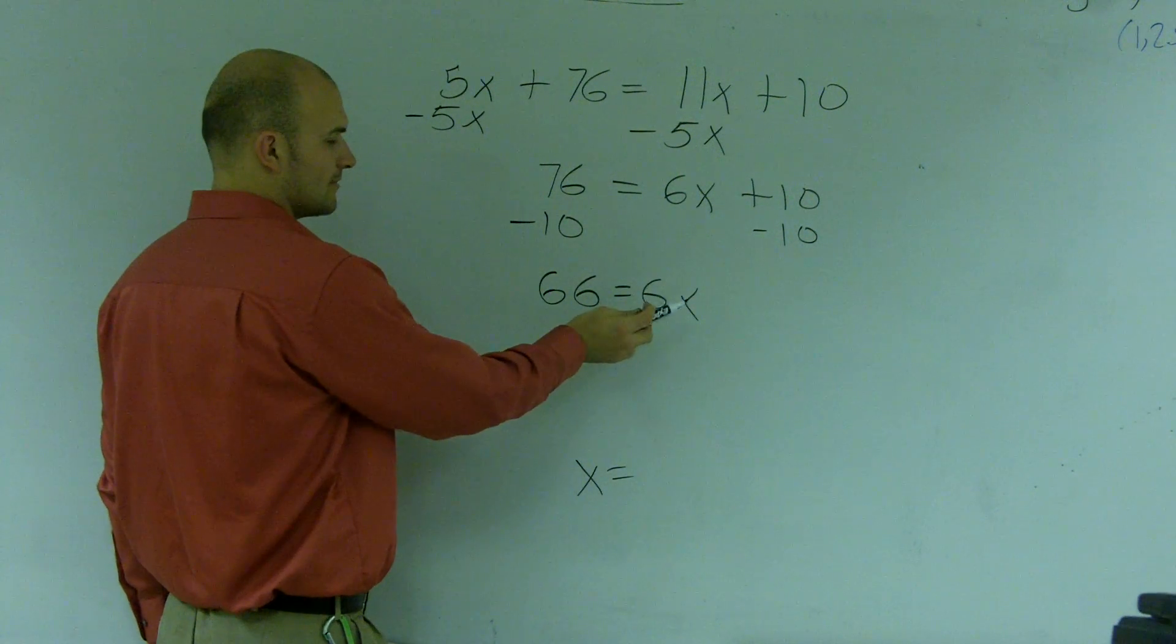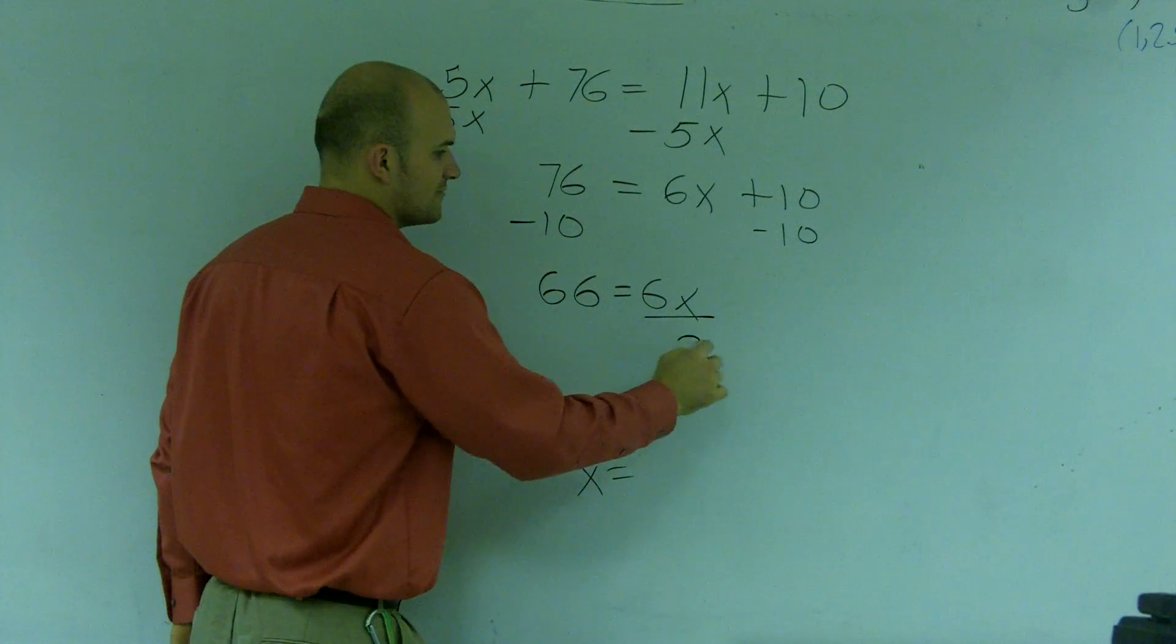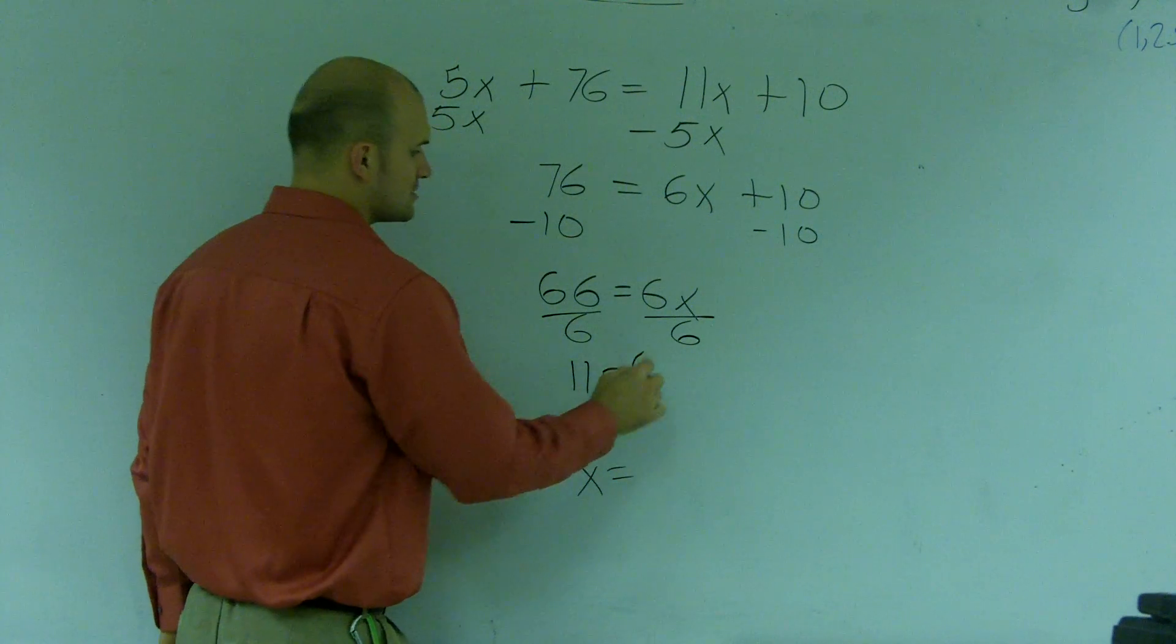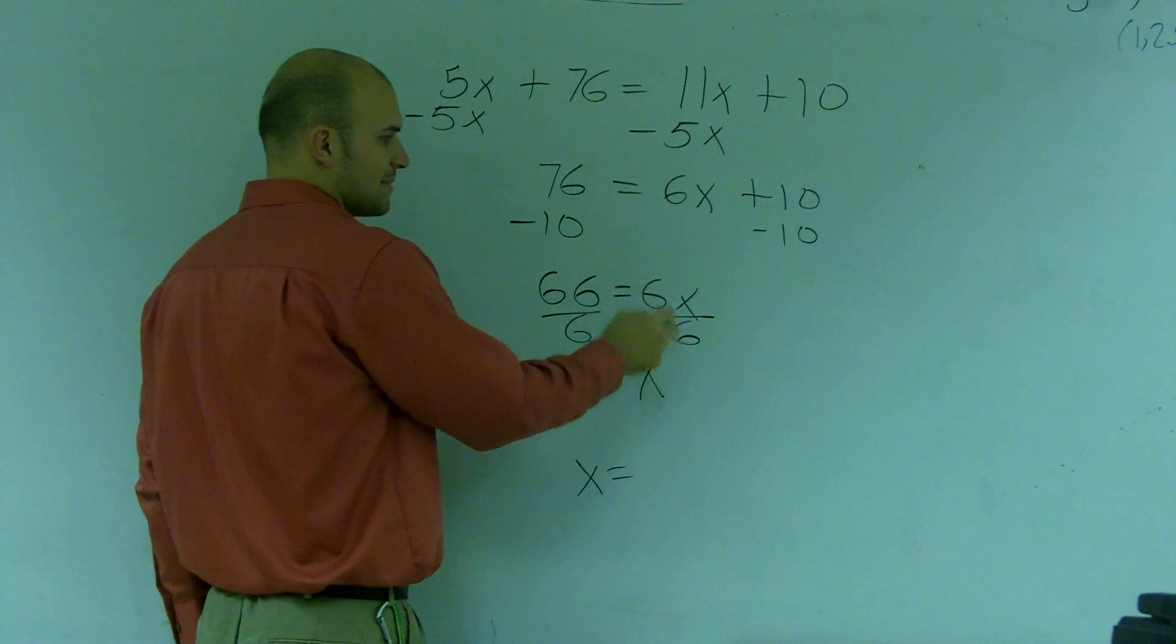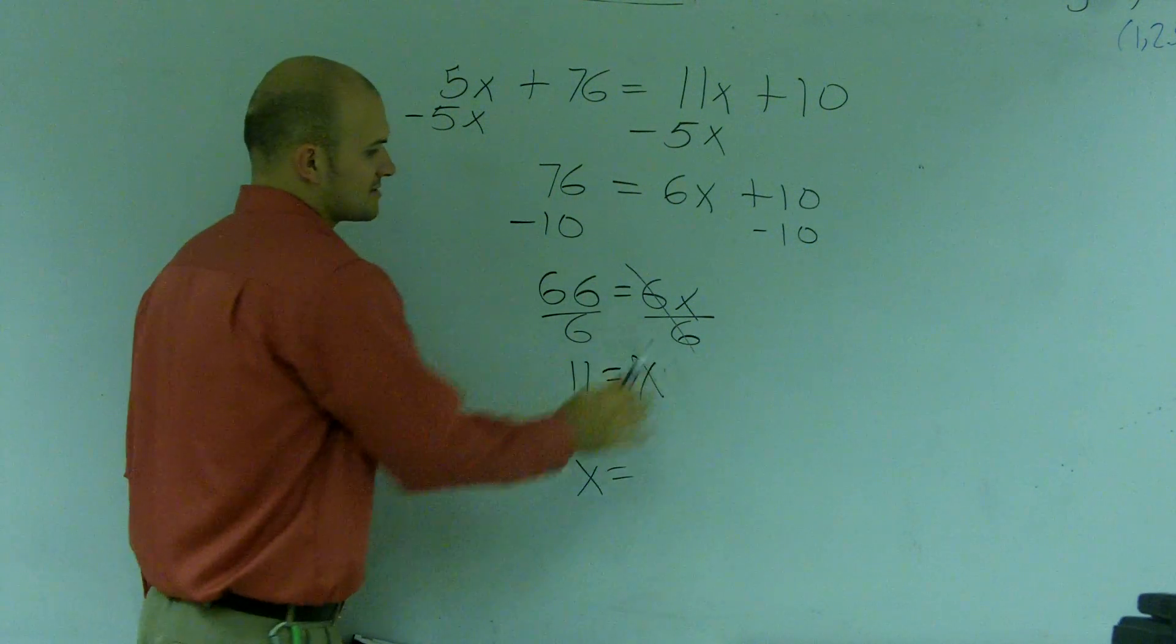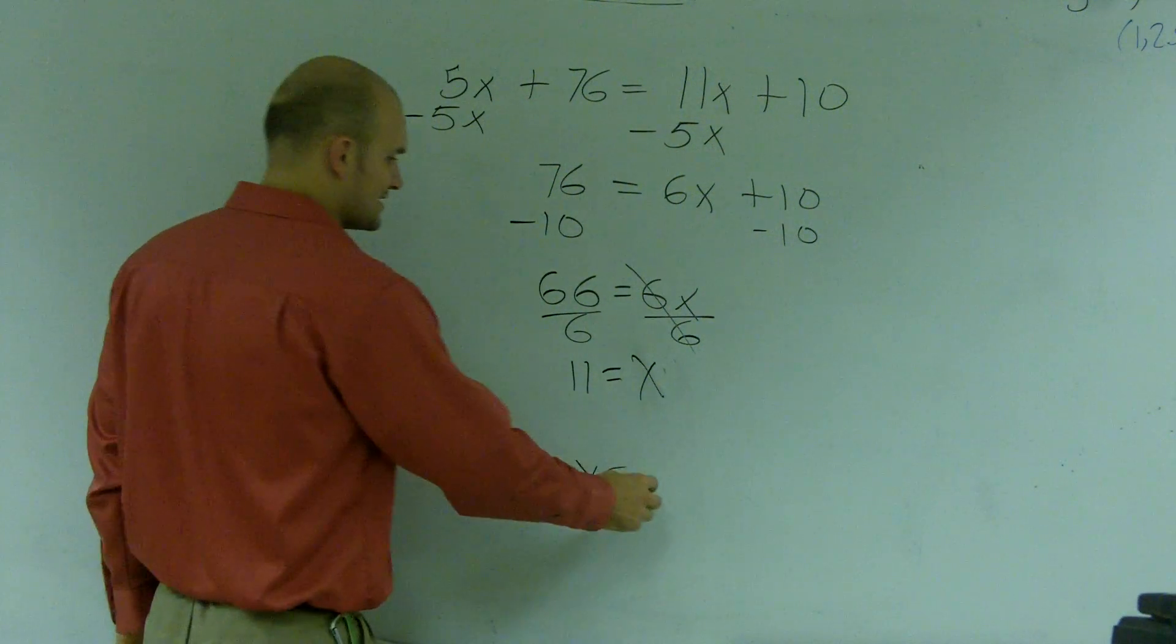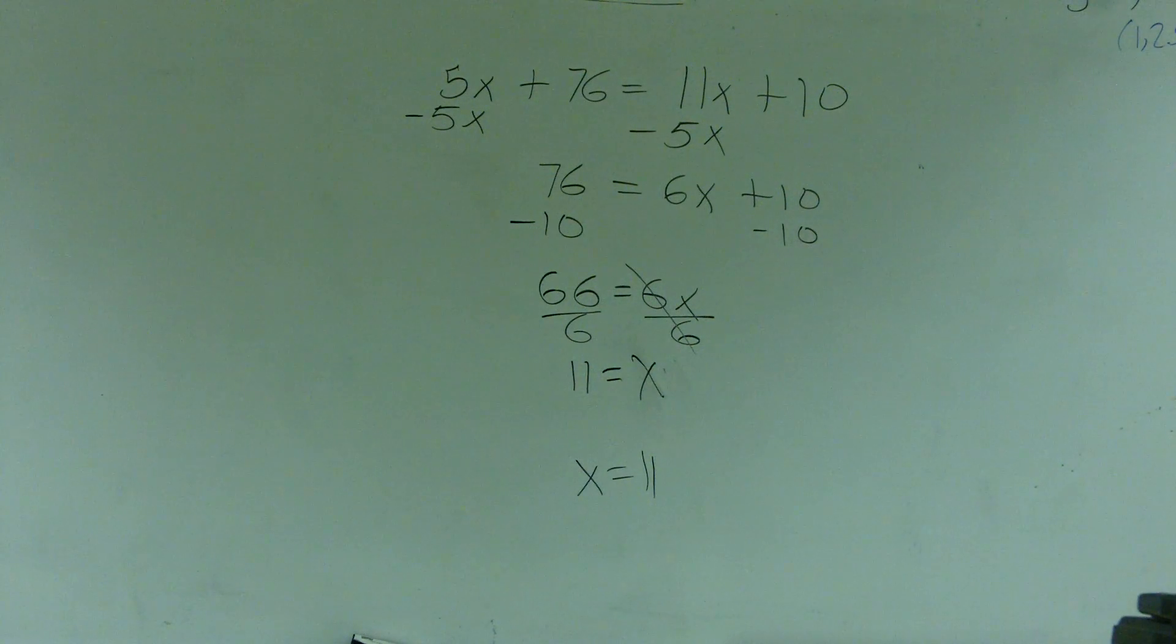So then, I have 66 equals 6x. I've got to undo multiplication. I divide by 6. And therefore, I get 11 equals x. As 6 divided by 6 cancels out to a 1. 1 times x is just x. So then, we don't really like to write 11 equals x. We like to write x equals 11. And that's how you solve that problem.